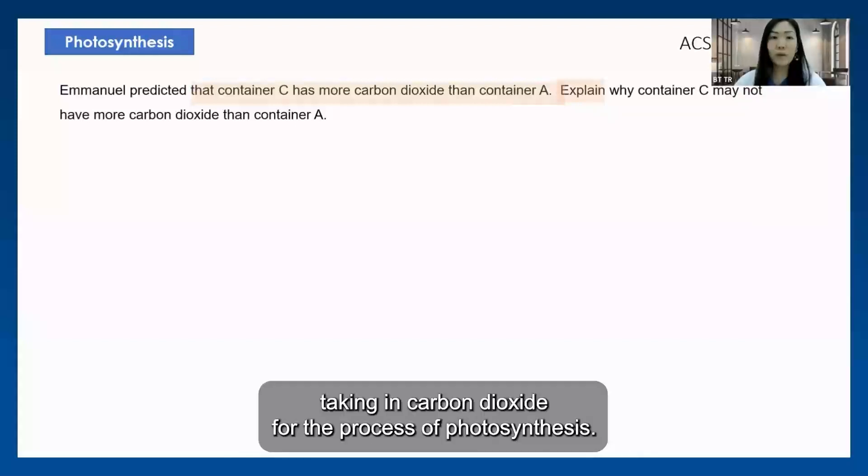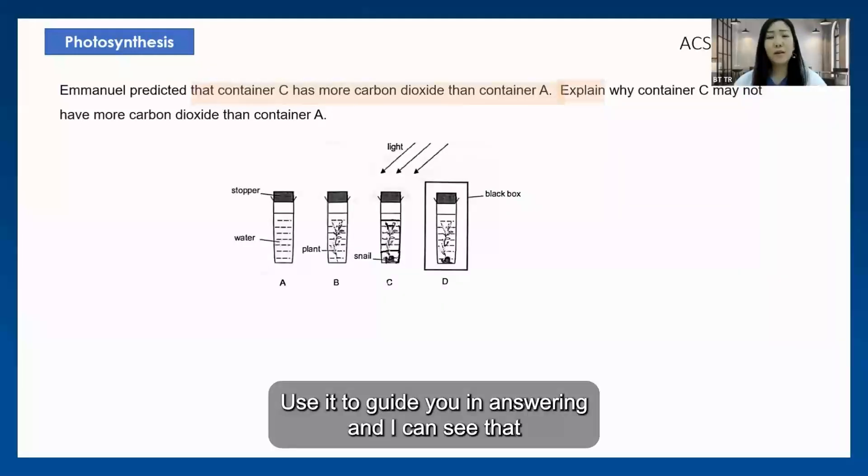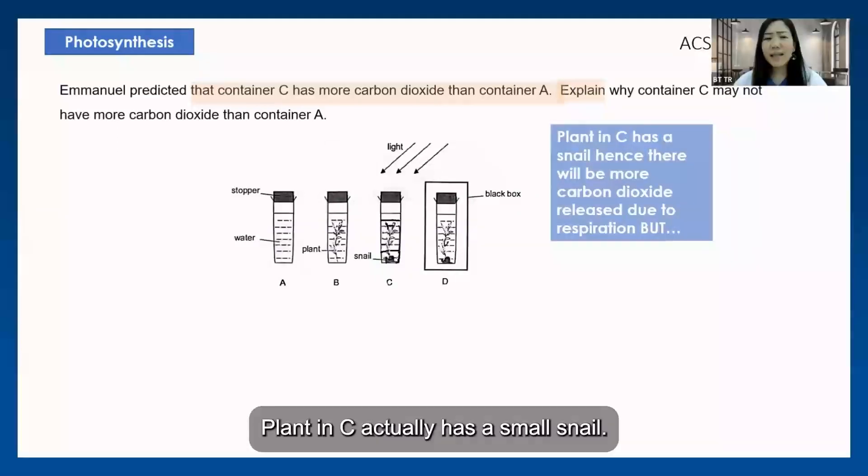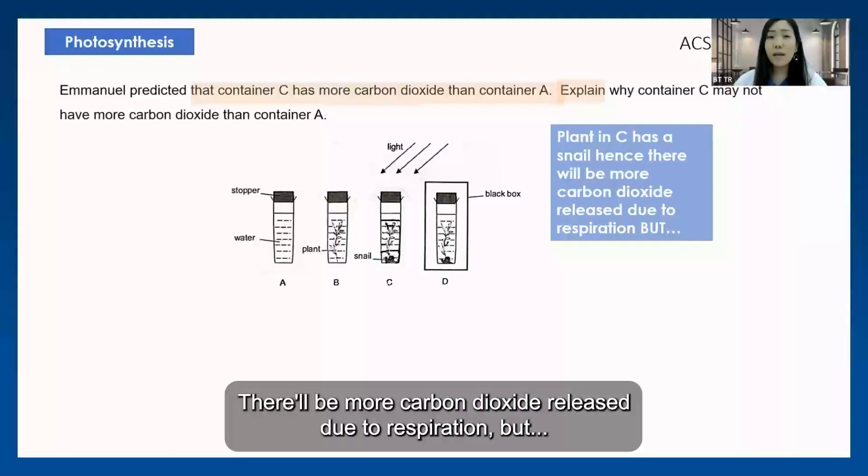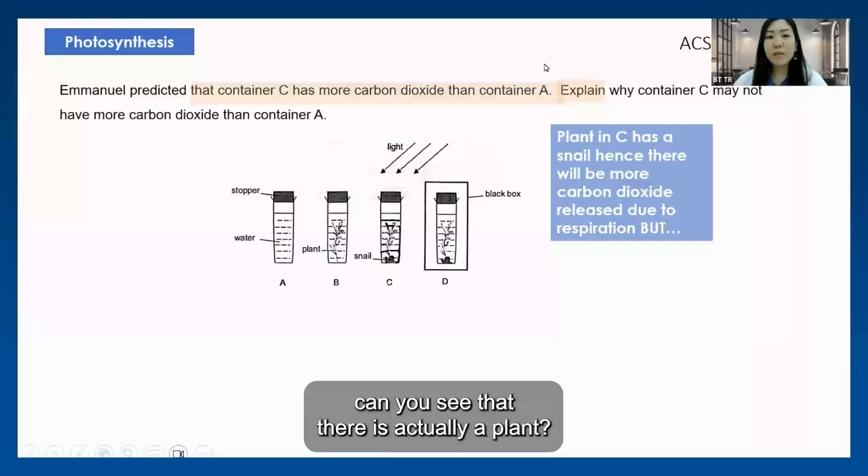Go back to the diagram again and I can see that the plant in C actually has a small snail - there'll be more carbon dioxide released due to respiration. But can you see that there is actually a plant?